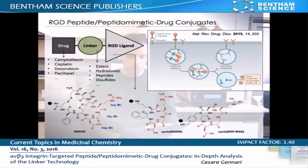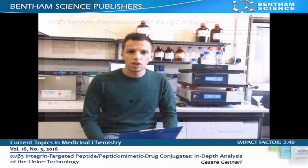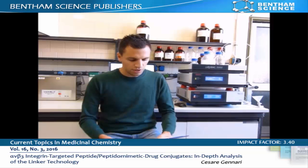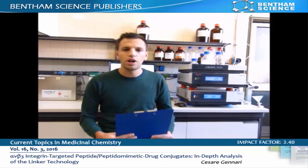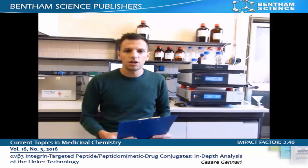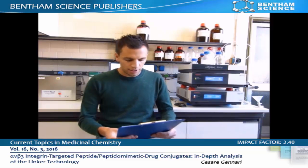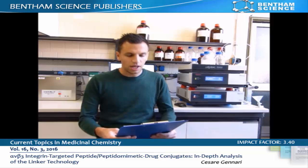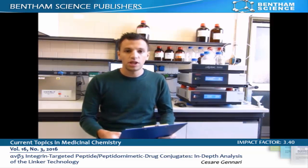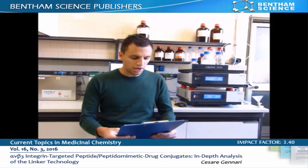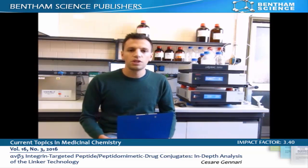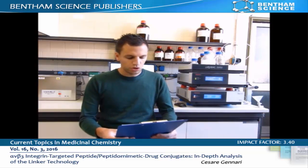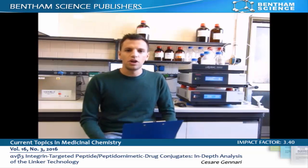Within this framework, this review focuses on the variety of linkers that have been used to connect RGD ligands to cytotoxic agents. In particular, we show examples of linkers that release the drug upon hydrolysis of several functional groups, such as esters and hydrazones, but also linkers that are cleaved by different enzymes and reducing agents. The molecular structure of all these RGD-drug conjugates is reported in the review, together with the observed biological activity in vitro and in vivo.